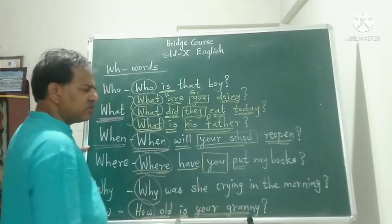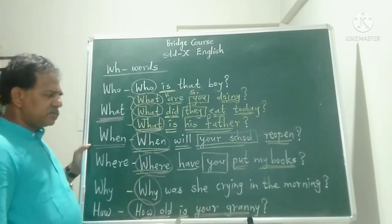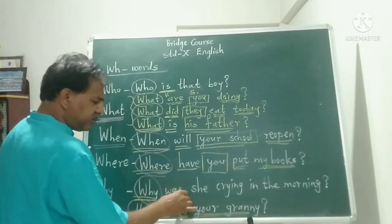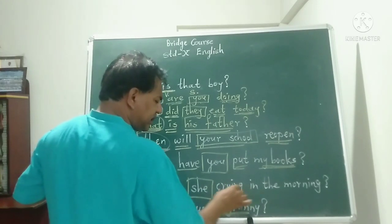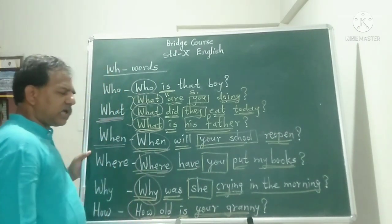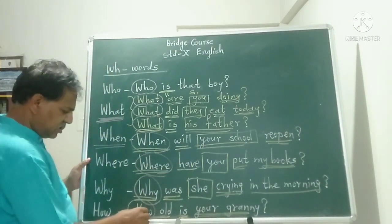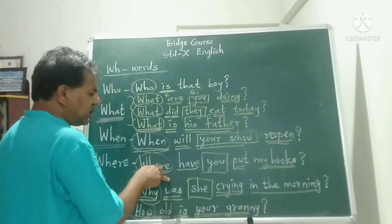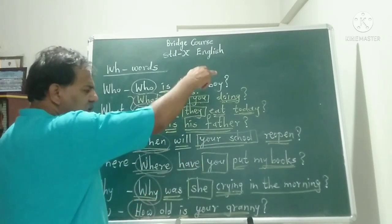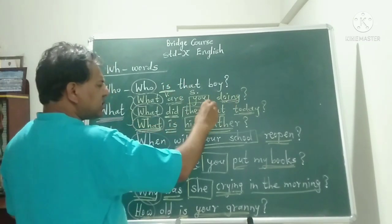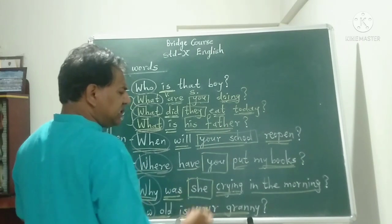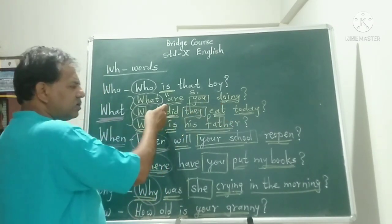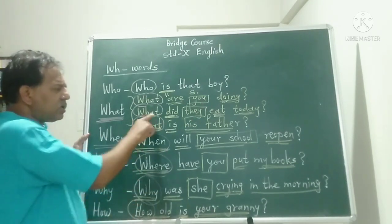Another structure includes WH word + helping word + subject + past participle word + object. And another: WH word + helping word + subject + main word in present participle form + time adverb. You see the common pattern: WH word, then helping word, then subject, then the main word in various forms — present participle, base word, or past participle — depending on the tense. Here the helping word DID is in past form, so the main verb is in base word form — simple past structure: 'What did they eat today?'